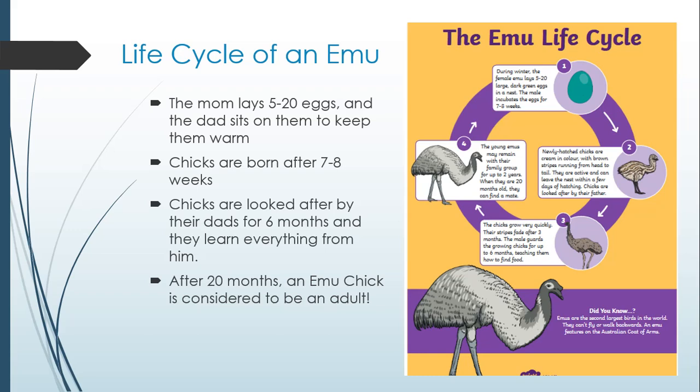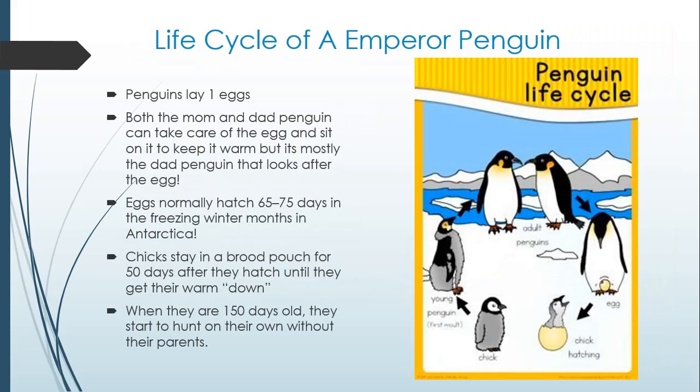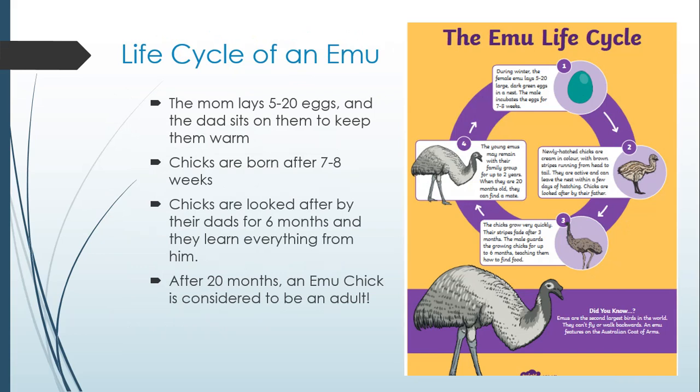The penguins' mom and dad switch off — mom will come and look after the newly hatched chick, then dad will go find food, and they take turns. But for an emu, the dad does it for 6 months. After about 20 months, an emu chick is considered to be an adult and can lay their own eggs. And the cycle starts again.